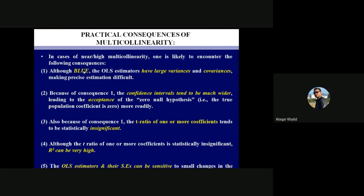The fifth consequence: sensitivity to small changes in the data. If you include or exclude observations from your data, the standard errors and OLS estimators will change automatically — and they will change more than expected. This small change in the original data brings larger-than-expected changes in the OLS estimators and their standard errors, because multicollinearity is present in your data.